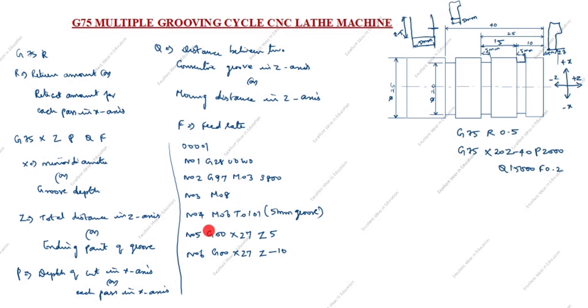This is very important step. G00 is rapid move, already we given in the N05 code, so no need to write it here. N07 G75 R0.5. You see here we wrote R0.5. Next is G75, this one we will write it here. G75 X20 Z-40 P2000 Q15000 F0.2.